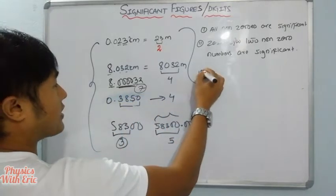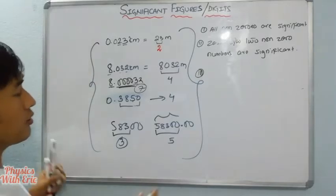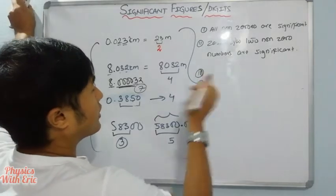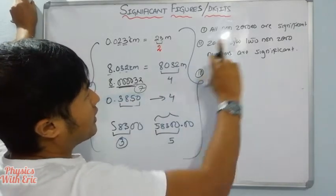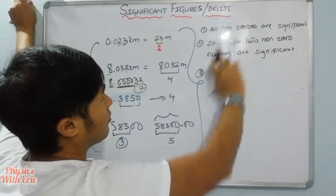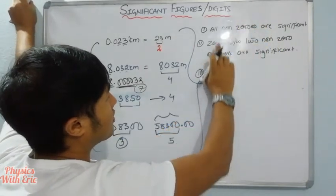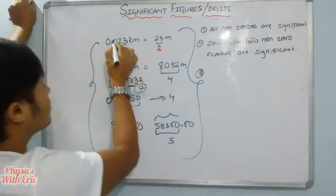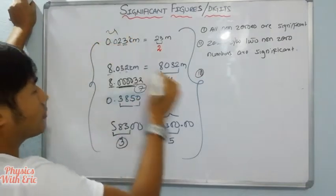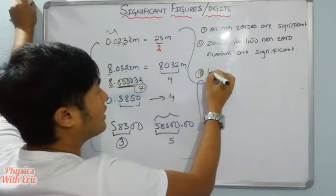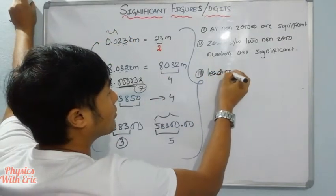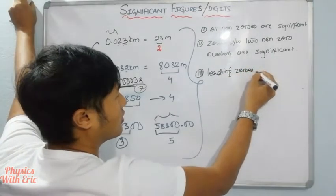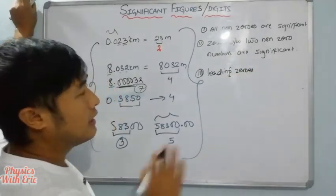Okay, rule number three. Don't get confused. This is about leading zeros. Leading zeros — those zeros that appear before non-zero digits — are non-significant.